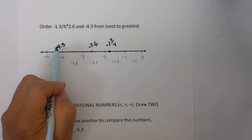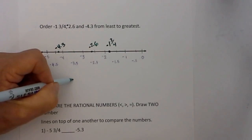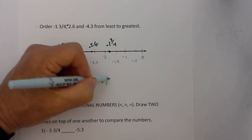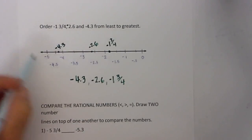Again, the numbers on the left are smaller than the numbers on the right. So I can rewrite that as negative 4.3, and then negative 2.6, and negative 1 and 3 fourths. Again, I have placed them on the number line. The numbers to the left are smaller than the numbers on the right.